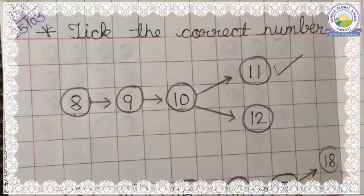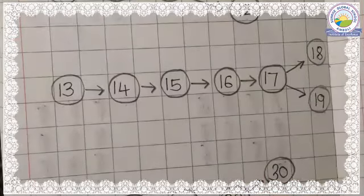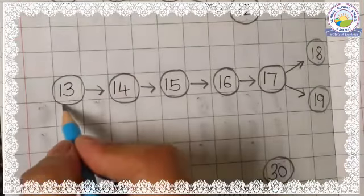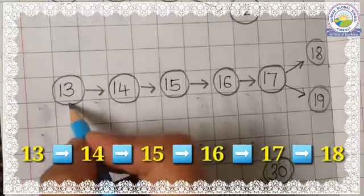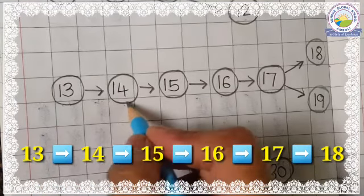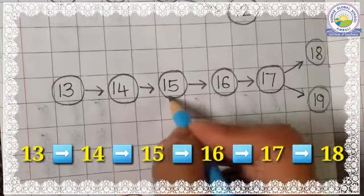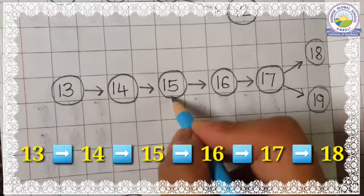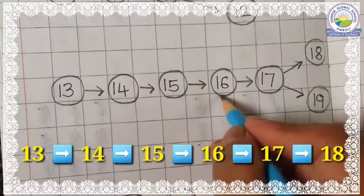Now we will see the next line. Our next line starts from 13. After 13 which number comes? 14. After 14 which number comes? 15. After 15 which number comes? 16.